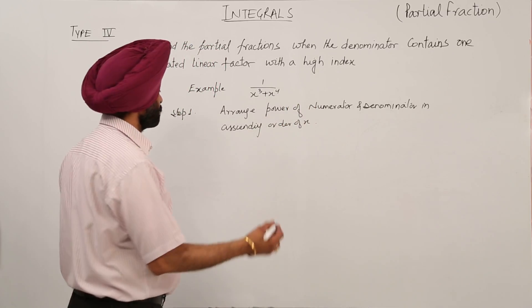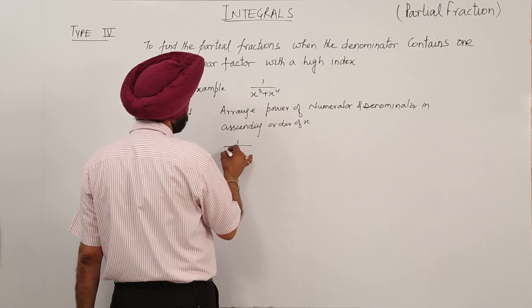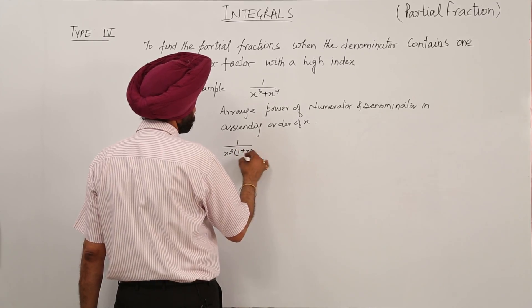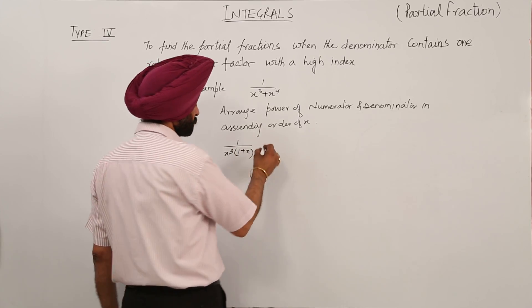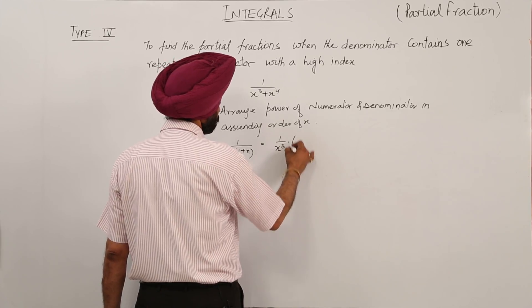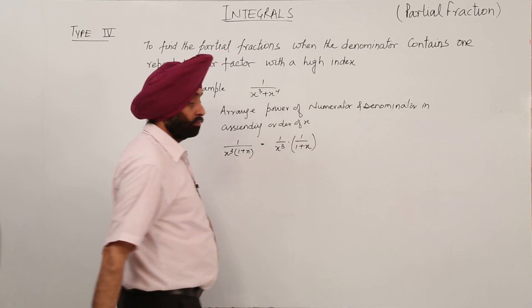This is the first step. Now what exactly does this mean? This can be written as 1 upon x cube and 1 plus x. So we are writing this as 1 upon x cube with 1 upon 1 plus x. Ok?